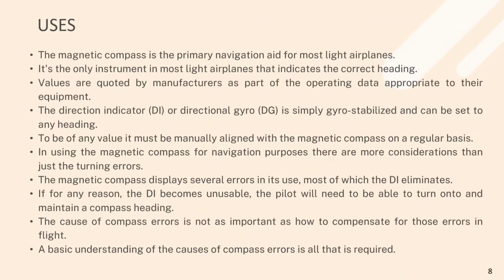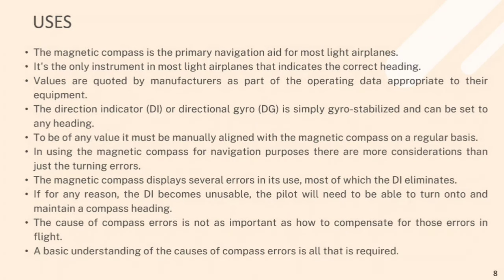The magnetic compass is a primary navigation aid for most light airplanes and is the only instrument in most light airplanes that indicates the correct heading. The direction indicator (DI) or directional gyro (DG) is simply gyro-stabilized and can be set to any heading. To be of any value, it must be manually aligned with the magnetic compass on a regular basis. In using the magnetic compass for navigation, there are more considerations than just turning errors, as the magnetic compass displays several errors in its use, most of which the DI eliminates.